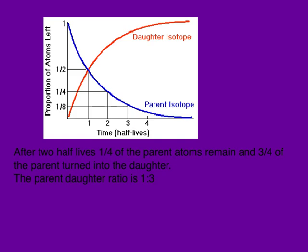After two half-lives, we would be right here on the graph — there is one quarter of the parent remaining. But at the same time, if we go up to the daughter isotope curve, we would see that there's three quarters of the daughter isotope. Therefore, at this point in time, we have the ratio of one quarter of the parent to three quarters of the daughter — a ratio of one to three.